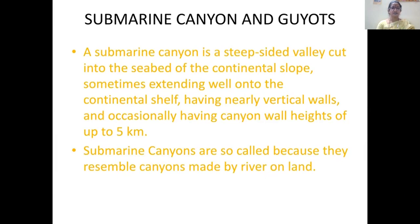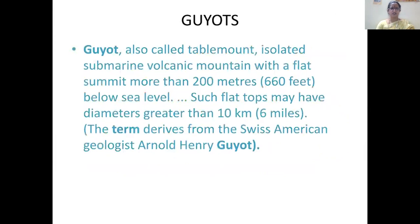A guyot is also called a table mount. It is an isolated submarine volcanic mountain with a flat summit more than 200 meters below sea level. Such flat tops may have a diameter greater than 10 kilometers. The name 'guyot' was derived from the Swiss-American geologist Arnaud Henry Guyot, and this relief feature of the ocean was named after him.